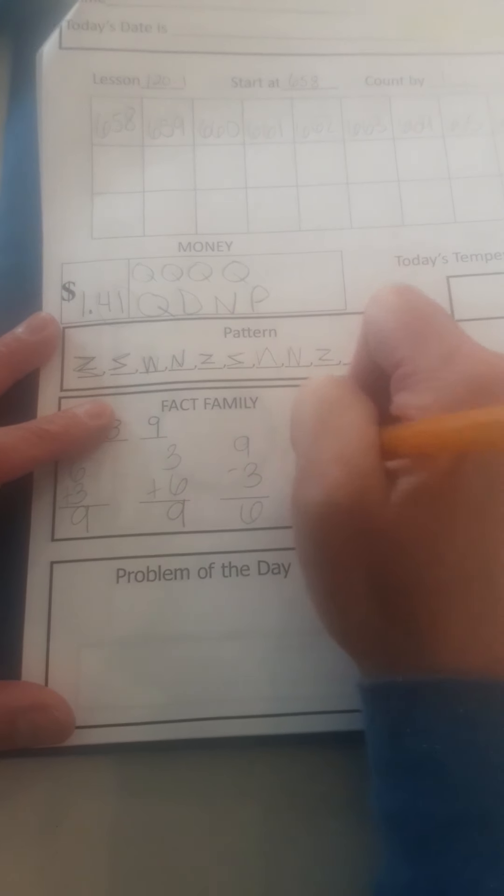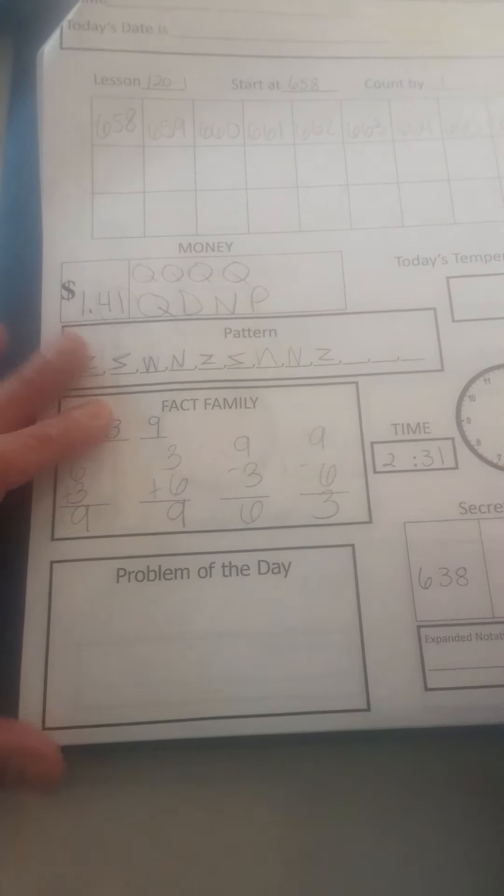Alright, fact family is six, three, and nine. Six plus three equals nine. Three plus six equals nine. Nine minus three is six, and nine minus six is three.